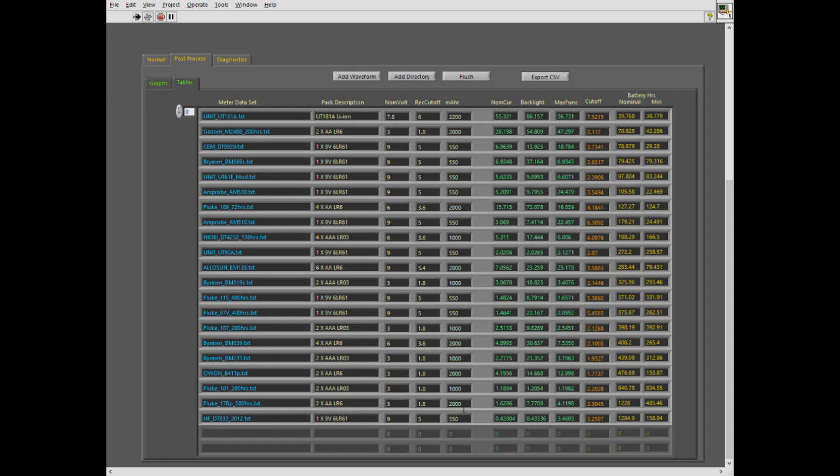You see, the next one on the list though is the Fluke 17B Plus. Of course, the battery pack that's used for the two of these are different. The Harbor Freight's using a standard 9-volt transistor battery, versus the Fluke 17B Plus, which is using two AAs.